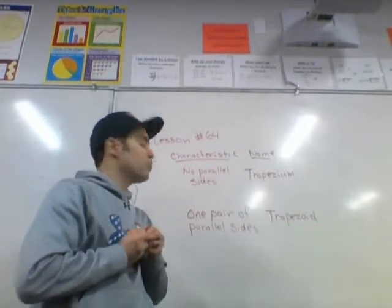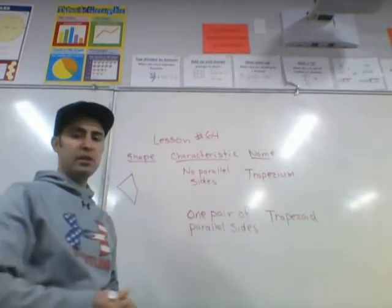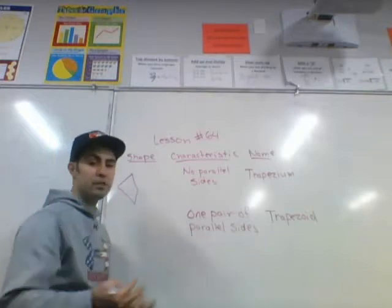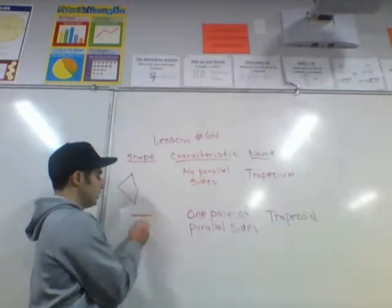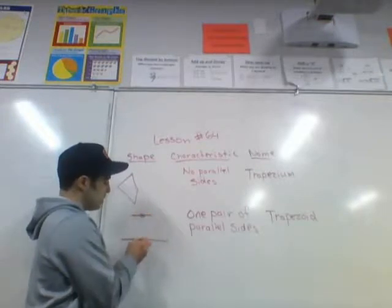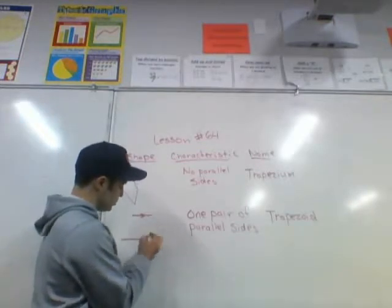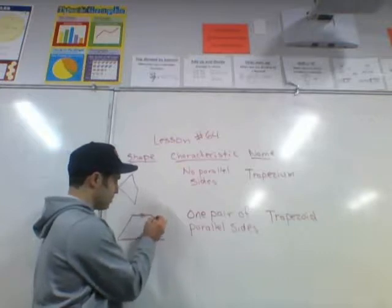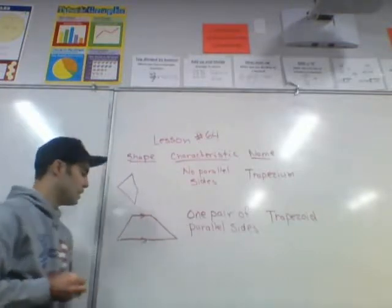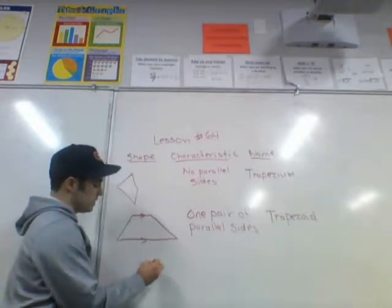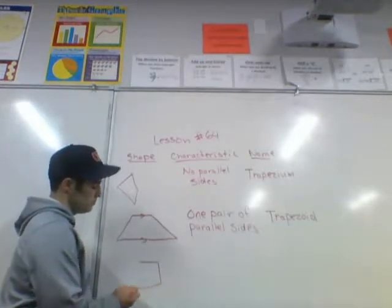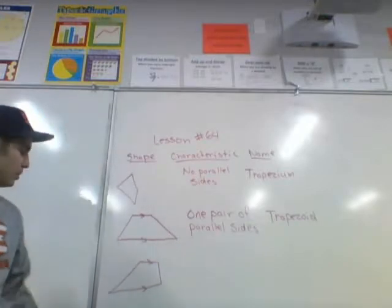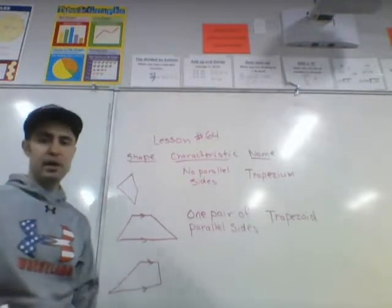The next shape is a trapezoid. A trapezoid has one pair of parallel sides — a pair meaning two. So there's only one set of two sides that are parallel. For example, this line is parallel with this line. Here's another example of a trapezoid where this line is parallel with that line. So those are a couple of examples of trapezoids.